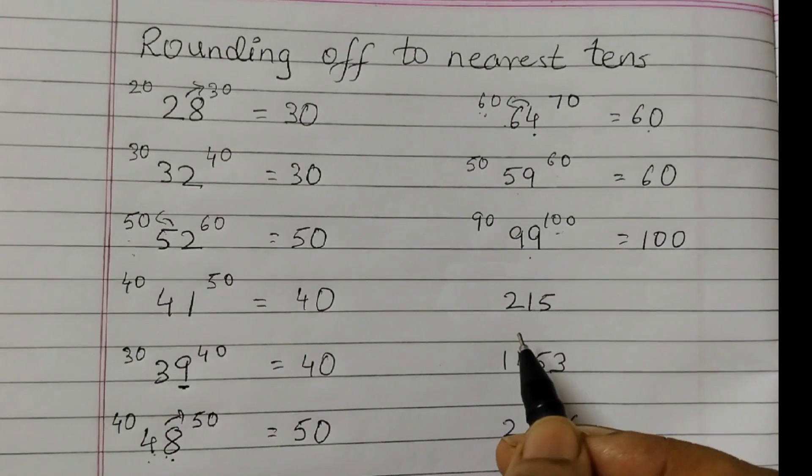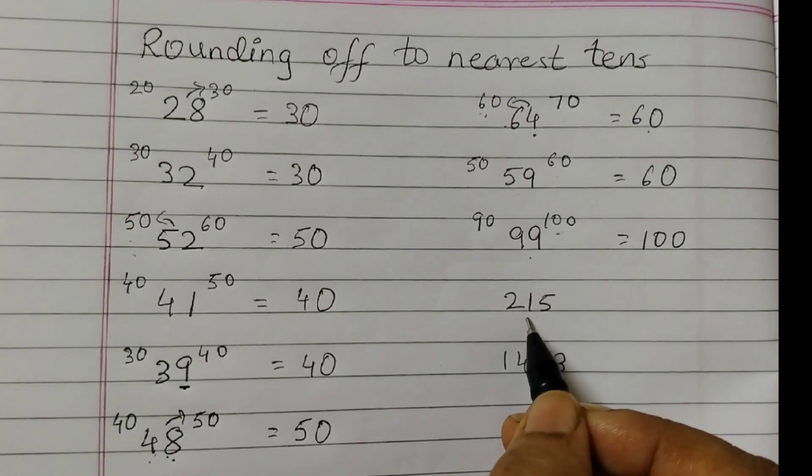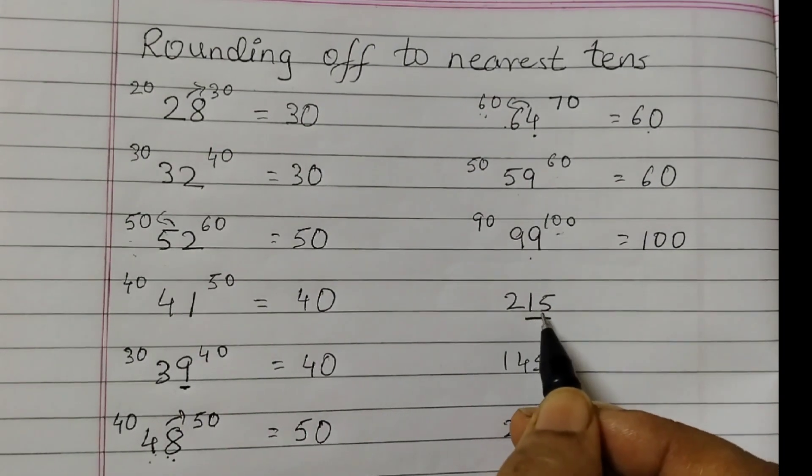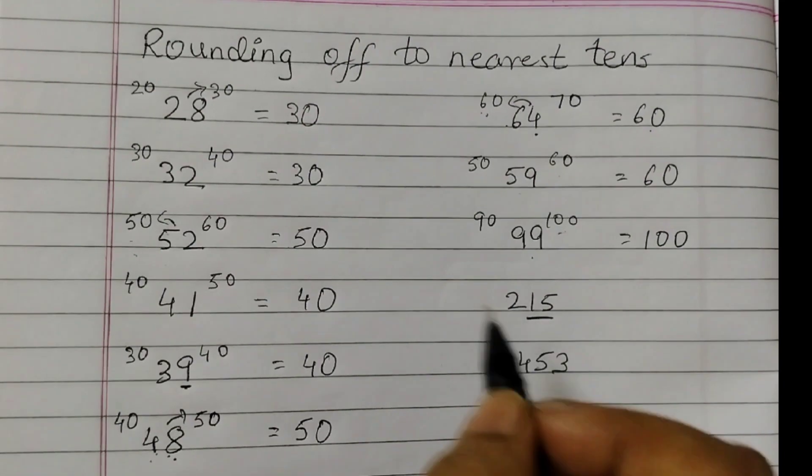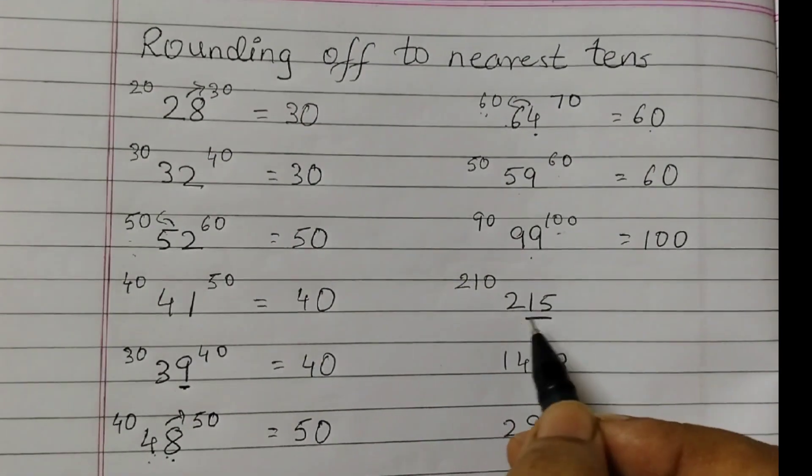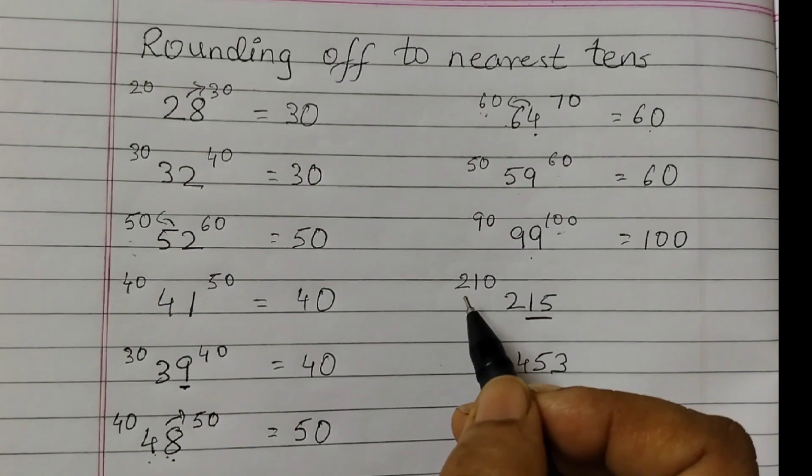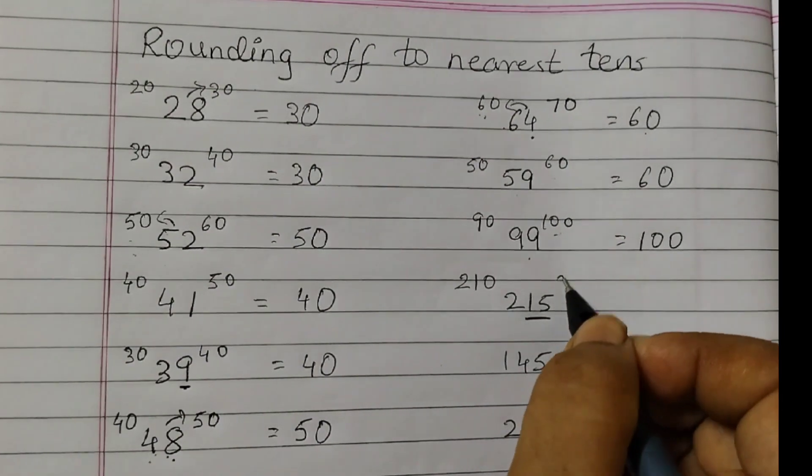Now this is a 3-digit number, 215. But we need to see these 2 digits only. We will see 15. So that's 210. 215 lies between 210 and 220.